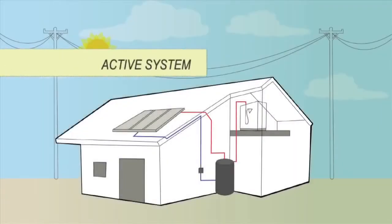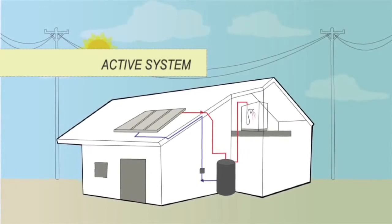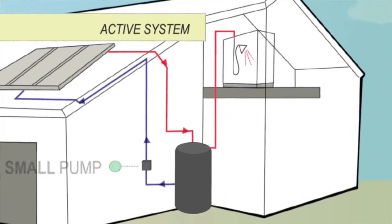Active systems use a small pump to move water between the collectors and the tank. The location of the tank can be within the roof or on the ground.